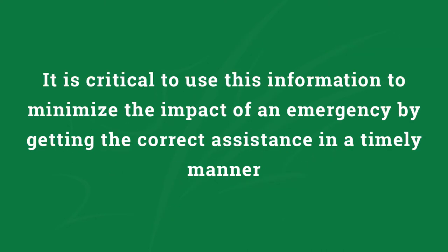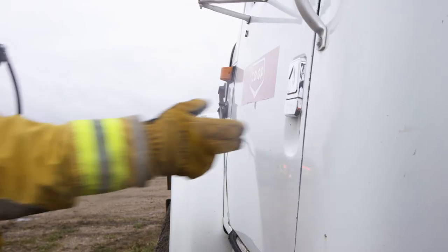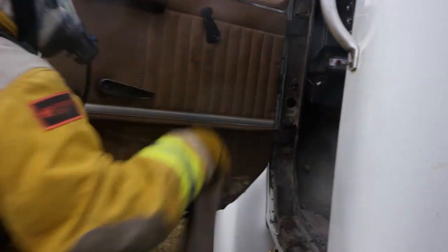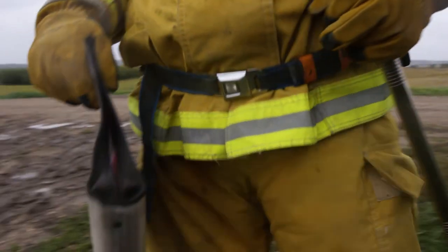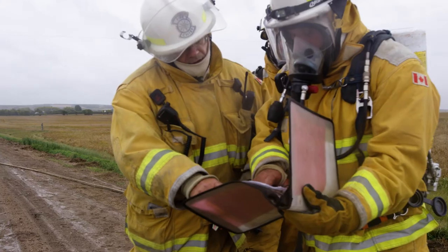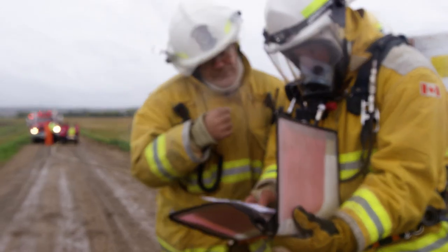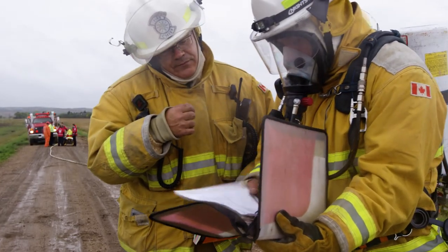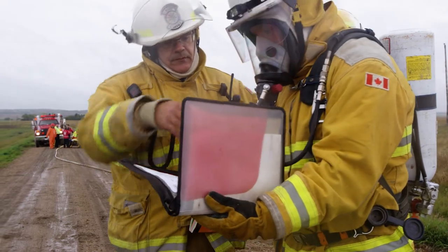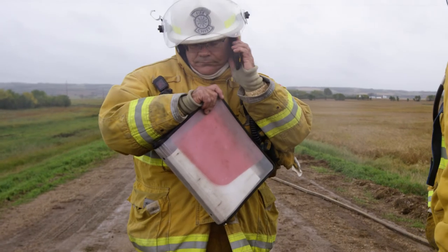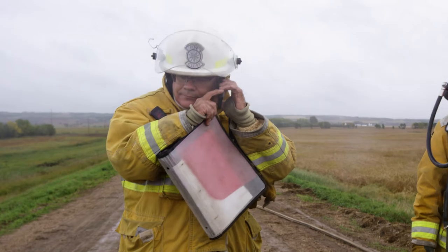This information is critical to minimize the impact of an emergency by getting the correct assistance in a timely manner. If the incident is on a highway, the driver will be able to contact dispatch for assistance. Shipping documents, found on the driver's door pocket or front seat of the vehicle, also contain a 24-hour emergency contact phone number. In an ammonia nurse tank less than 10,000 liters, there may not be shipping documents present in the vehicle. In this case, the 24-hour emergency contact phone number should be used to implement the emergency response plan.